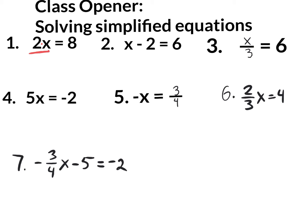We're going to do division with a fraction bar. Divide the left side by 2. What you do to one side you must do to the other side to maintain the equality. So x equals 4. If you wanted to double-check it, all you have to do is plug in 4. 2 times 4 really is 8.